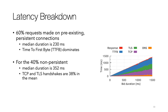In this graph, the x-axis plots total request duration and the y-axis breaks it down into different steps: DNS resolution, TCP handshake, TLS handshake, time to first byte, and time to download the response. The responses are fairly small so download time is minimal. We can see that at the median duration of about 352 milliseconds, TCP and TLS handshakes take up considerable time.